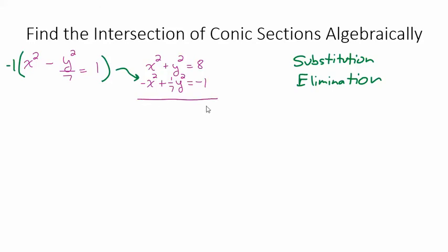Okay, so when we add these two together, these x squareds are going to drop out. We're going to add these two equations together. We're sort of like combining like terms here. These x squareds are going to drop out. We have 1y squared plus a seventh y squared. That's 1 and 1 seventh. We have 1 and 1 seventh y squared. And 8 take away 1 is 7. 1 and 1 seventh, that's the same as 8 sevenths.